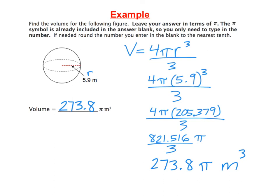Leave your answer like that. If you did want a decimal approximation, you could put it in your calculator. But on Schoology, remember, don't do that. Don't use your pi button. Don't multiply by 3.14. On Schoology, you are just going to leave it as 273.8 pi meters cubed.